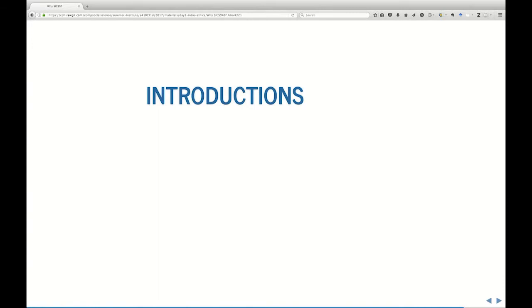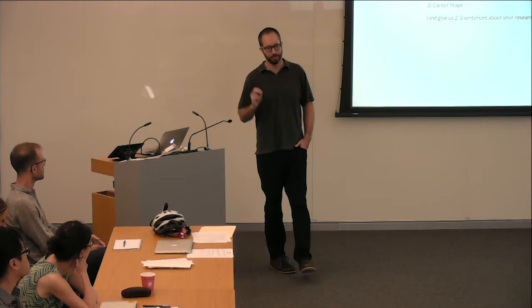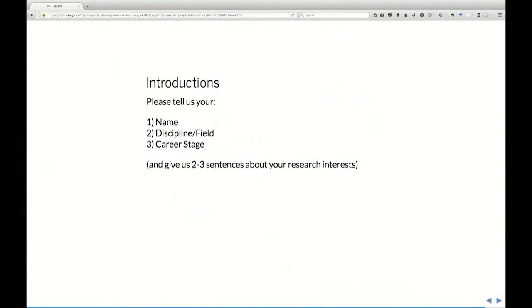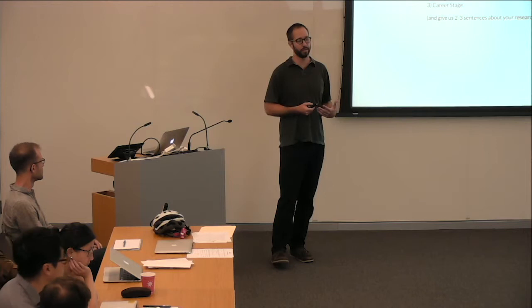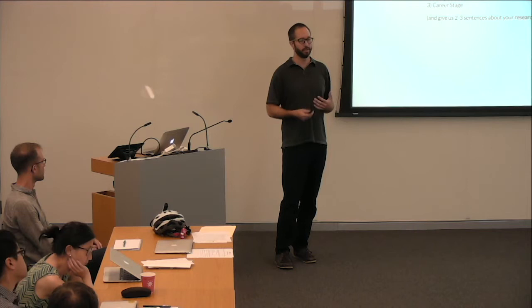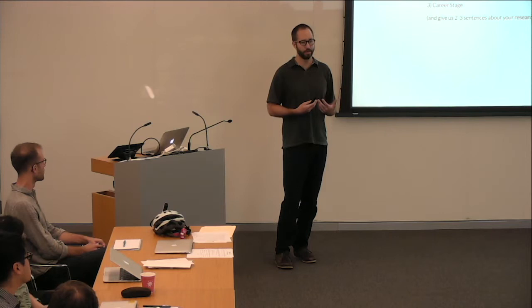Okay, so that's the spiel — where the institute came from, what we hope to do, how we hope to get there. Finally, we'd like to go around and do introductions. What I'd ask is just to give your name, your discipline or field, your career stage, and two to three sentences about your research interests. I'll go ahead and start. I'm Chris Bale. I'm an Associate Professor of Sociology and Public Policy at Duke. A lot of my work is on text analysis — specifically bringing network analysis and automated text analysis together. I've also done a lot of work building apps for social science research, and substantively I'm interested in counter-terrorism, nonprofit organizations, and a variety of public health issues.